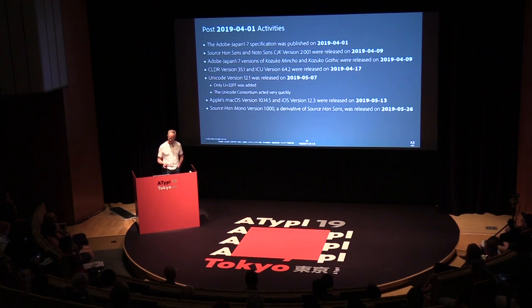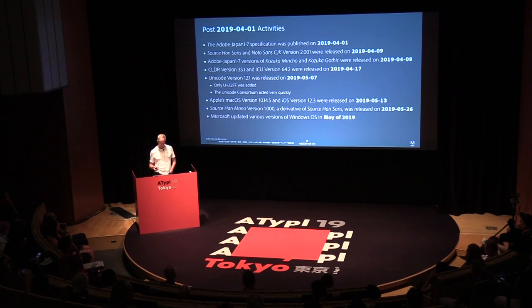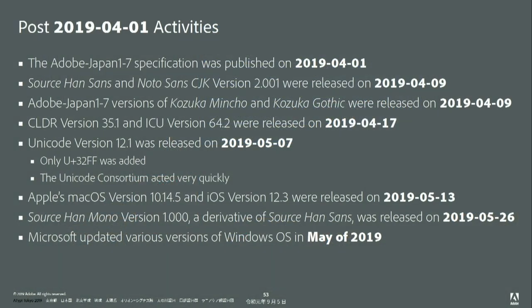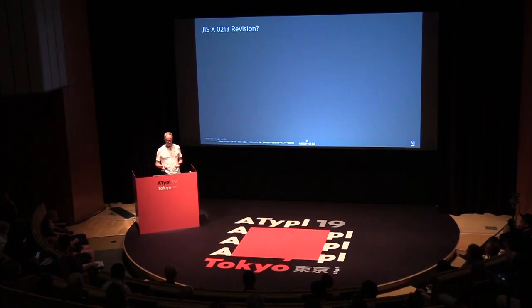Apple's Mac OS and iOS were updated on May 13th to support this. Source Han Mono, a derivative of Source Han Sans, was released at the end of May and is believed to be the first new typeface supporting the new era-name ligature. Microsoft updated various versions of Windows OS in May. Google's Android Q beta 4 was released in June. I was also hesitant to update the Heisei fonts with the Reiwa ligature, but we received requests, so I reluctantly updated our two core Heisei fonts to include it — which I find ironic.